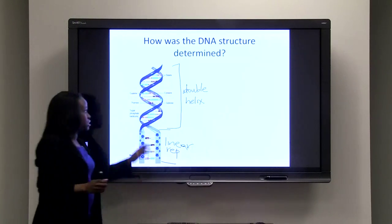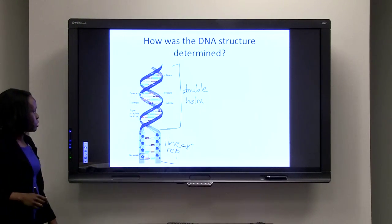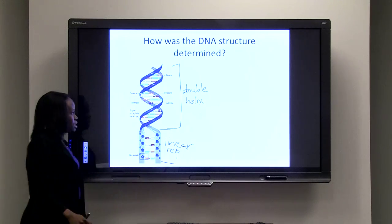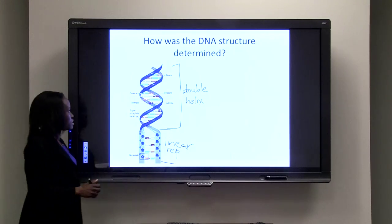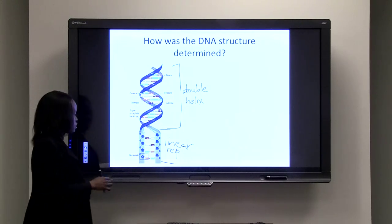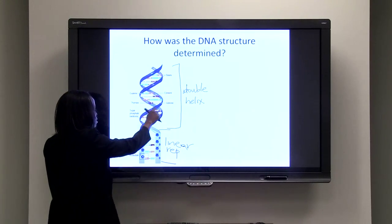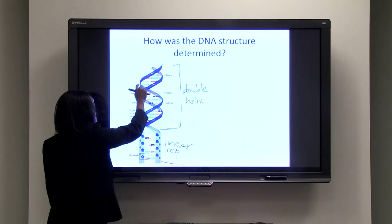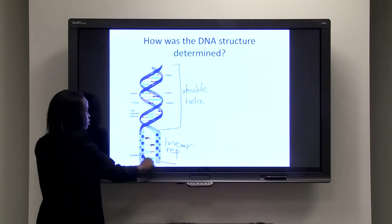And it looks kind of like a spiral staircase. So, it's made up of two strands. And from the data, they were able to deduce that the strands are basically running opposite direction to each other. So, this strand is running in that direction and the other strand is running in the opposite direction.